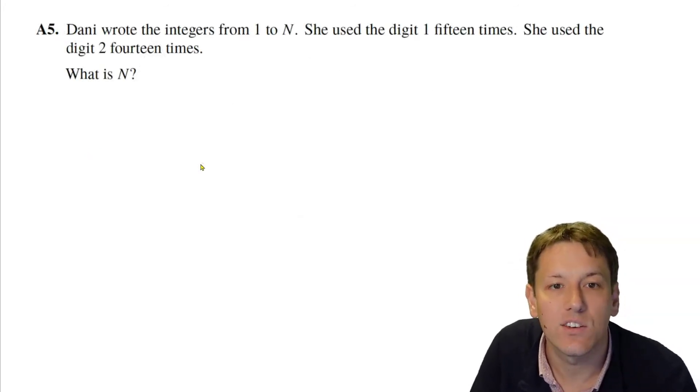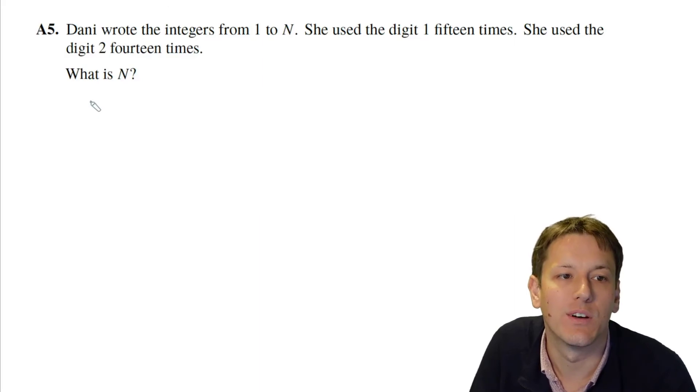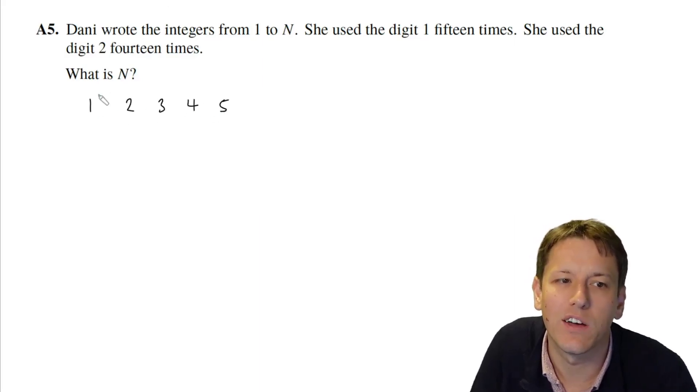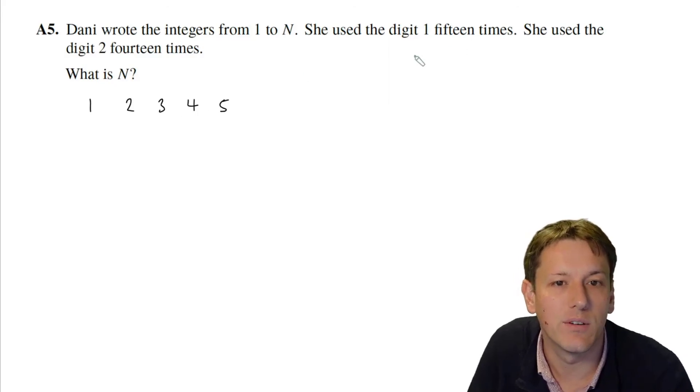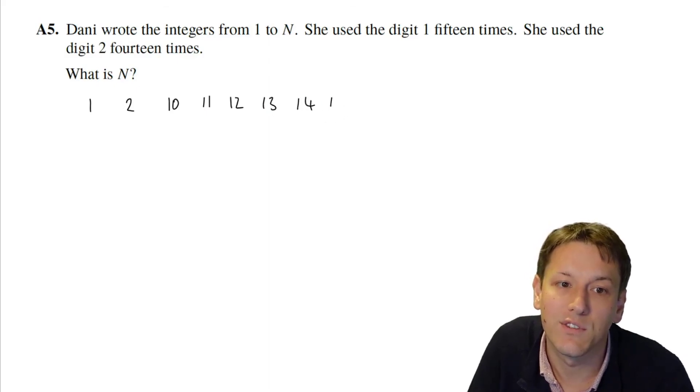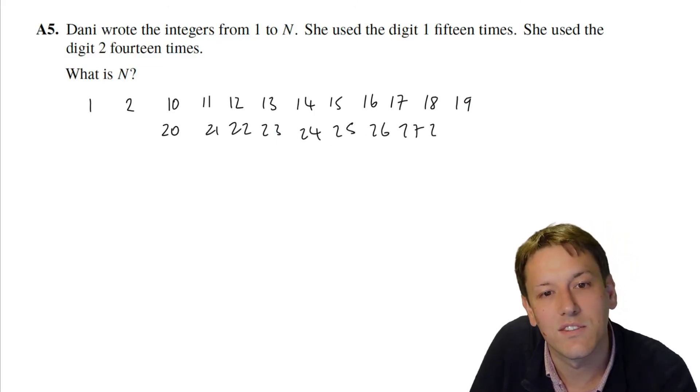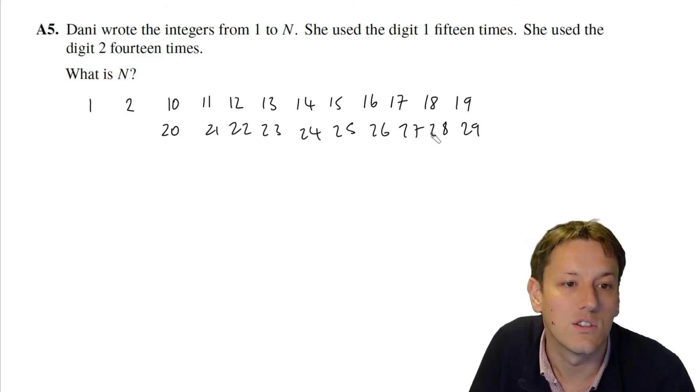Dani wrote the integers from 1 to n. She used the digit 1 fifteen times and the digit 2 fourteen times. What is n? So I'm just going to start writing down numbers in order: 1, 2, 3, 4, 5, and just count how many ones and twos we use along the way. Now what I'm going to do to make this more efficient is not write down numbers that don't include ones or twos. So we'll not write down the 3, 4, and 5. So the next number that includes a 1 will be 10, and then it'll be 11, 12, 13, 14, 15, 16, 17, 18, 19—they all include ones. All the numbers 20, 21, 22, 23, 24, 25, 26, 27, 28, 29 all include twos.